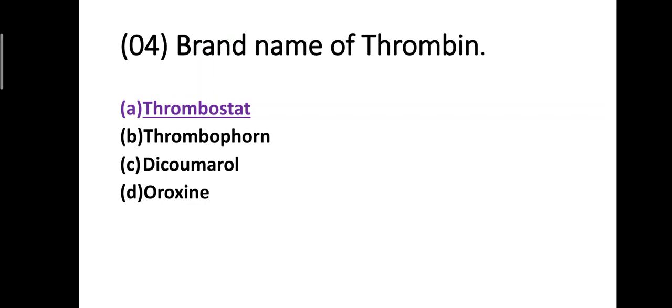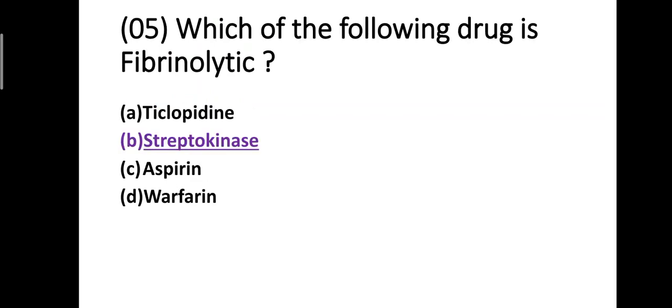Question number four: Brand name of thrombin — option A: Thrombostat, option B: Thrombophon, option C: Dicoumarol, option D: Oroxin. Correct answer is option A, Thrombostat. The brand name of thrombin is Thrombostat.